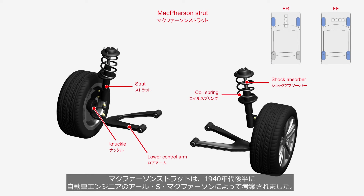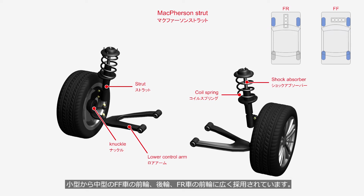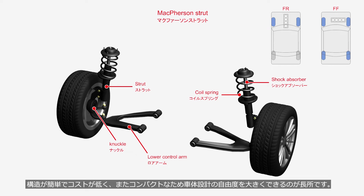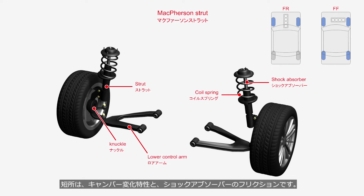The McPherson strut was devised by automotive engineer Earl S. McPherson in the late 1940s. It consists of a strut integrating a suspension spring and shock absorber, knuckle, and lower control arm. They are widely adopted for the front and rear wheels of FF vehicles and the front wheels of FR vehicles of small to midsize. The advantages are a simple and cost-effective structure, as well as high design flexibility due to compact size. The drawbacks include camber change characteristics and friction in the shock absorber.